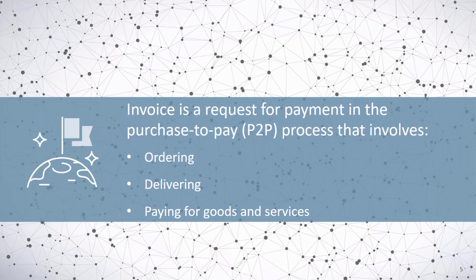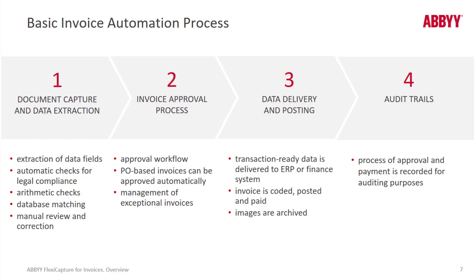Invoice processing covers the process from receiving invoices to posting the payment. A basic invoice automation process consists of four major stages. The first is document capture and data extraction, which also includes automatic checks for compliance with government regulations, arithmetic checks, checks against business rules, and database matching, followed by a manual review and correction of the data if necessary.